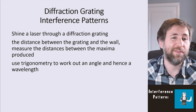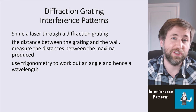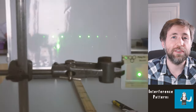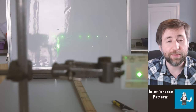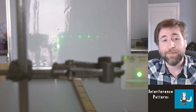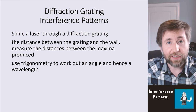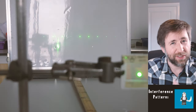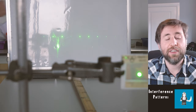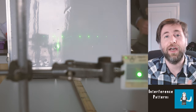This is the basic method. You shine a laser through a diffraction grating, measure the distance between the grating and the wall, and also the distance between the maxima — the bright spots on the screen. You then use trigonometry to work out the angle between the zeroth order, which is straight through the path of the laser, and each of the maxima.